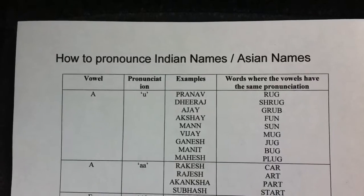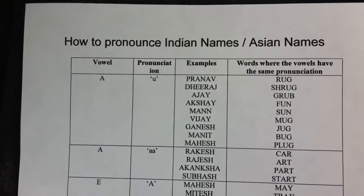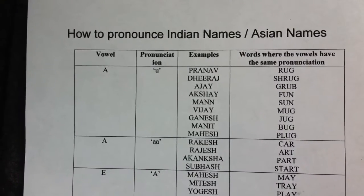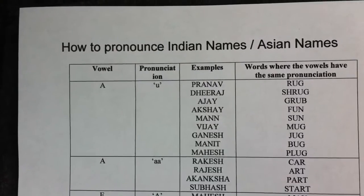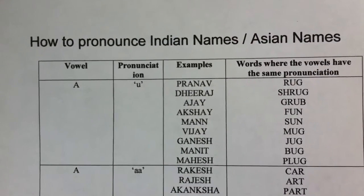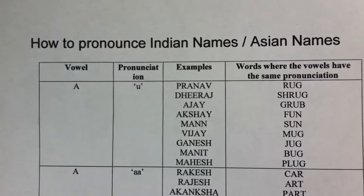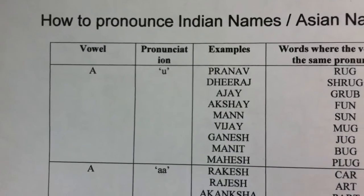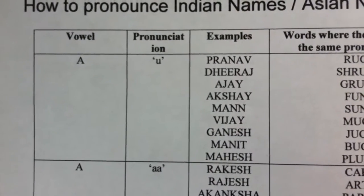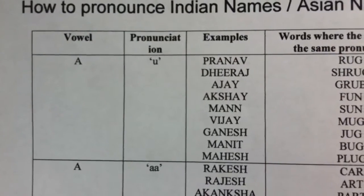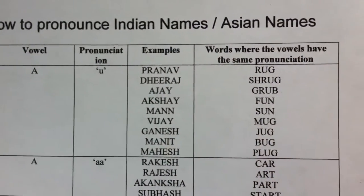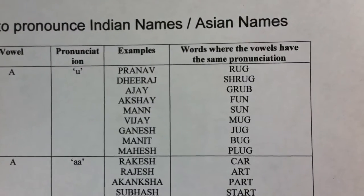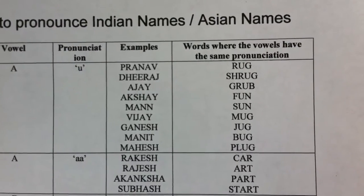The letter A is pronounced as the short 'uh' sound in certain names. Names where the vowel A has this pronunciation include several common examples. For reference, words from the English dictionary where the vowel has the same pronunciation would be: rug, shrug, grub, fun, sun, mug, jug, bug, plug.